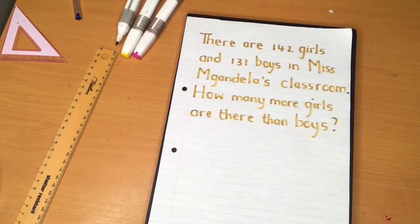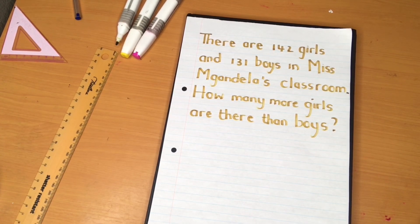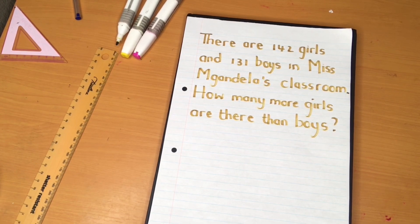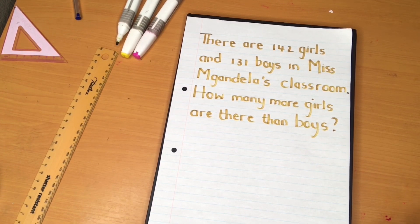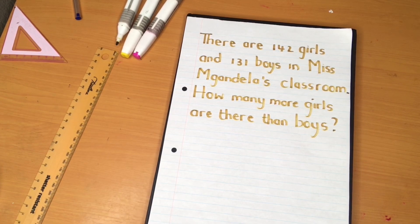Our first word problem reads: there are 142 girls and 131 boys in Miss Amgandela's classroom. How many more girls are there than boys? Now before we get started, we first need to figure out what kind of word problem this is by finding our special word.